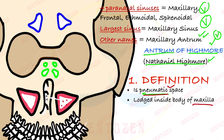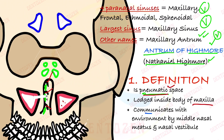Third, how it communicates with the exterior — it needs a communication so that anything inside the sinus can come out. It communicates through an opening in the lateral wall of the nasal cavity. Within that lateral wall there are three bony projections: the superior concha, middle concha, and inferior concha. Below these are spaces called meatus — superior, middle, and inferior meatus. The maxillary sinus opens in the middle nasal meatus, communicating via the middle nasal meatus.